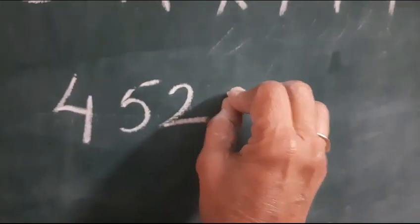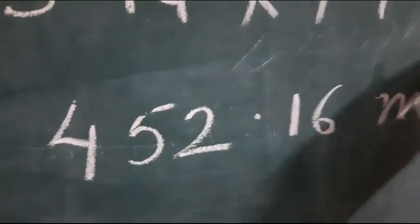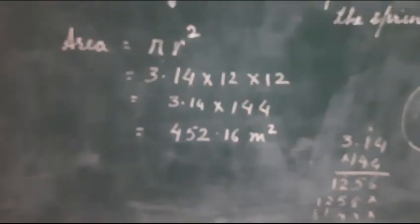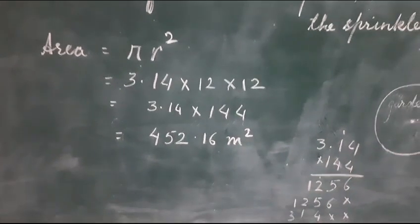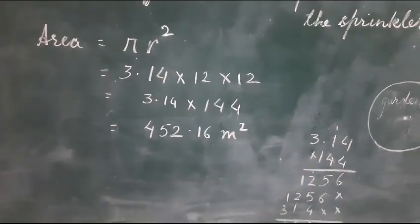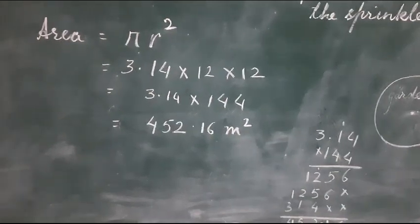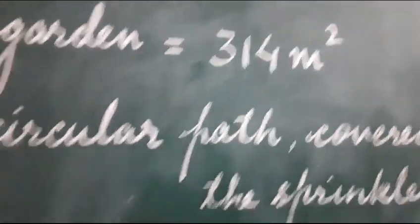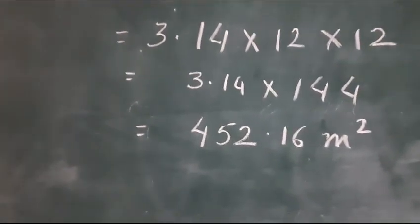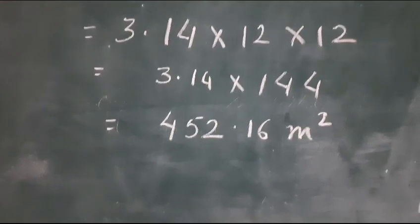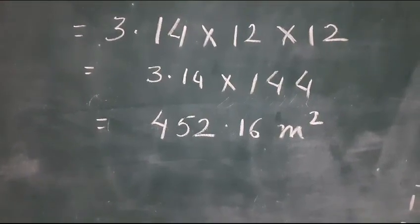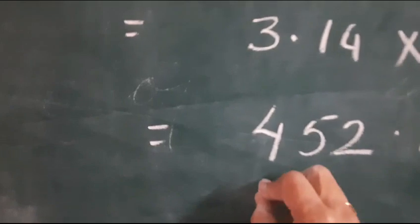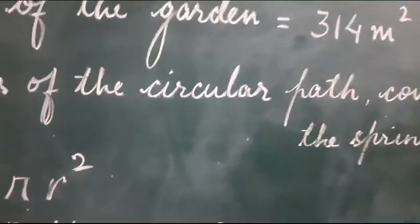We get the area 452.16 meter square. Now I am showing you, we have calculated the area which is covered by the sprinkler. You see the area of the garden is 314 meters and the area which is covered by the sprinkler is 452.16 meter square. That means this area is more than the area of the garden.